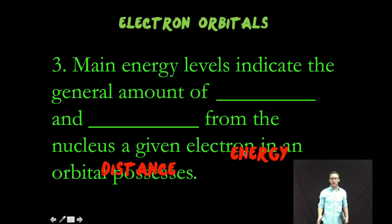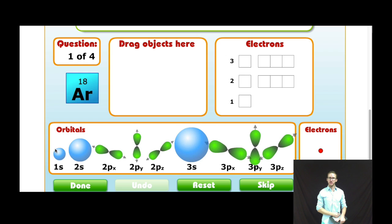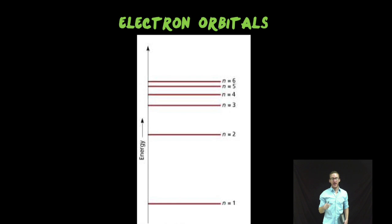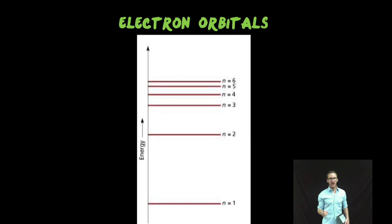Now, turns out these orbitals are organized into main energy levels that indicate the general amount of energy and distance from the nucleus that a given electron in an orbital possesses. So again, as you take a look at your screen, we're going to talk about how these orbitals are organized into a series of main energy levels. And a couple of important things to keep in mind about those main energy levels. Take a look at the image on your screen, and you've also got this in your notes. Keep in mind, the further you move from the nucleus, the greater amount of energy those electrons possess. But also note, the further away you get, the closer those energy levels become. And recognize that although this image only shows six energy levels, hypothetically, we could have an infinite number of main energy levels.